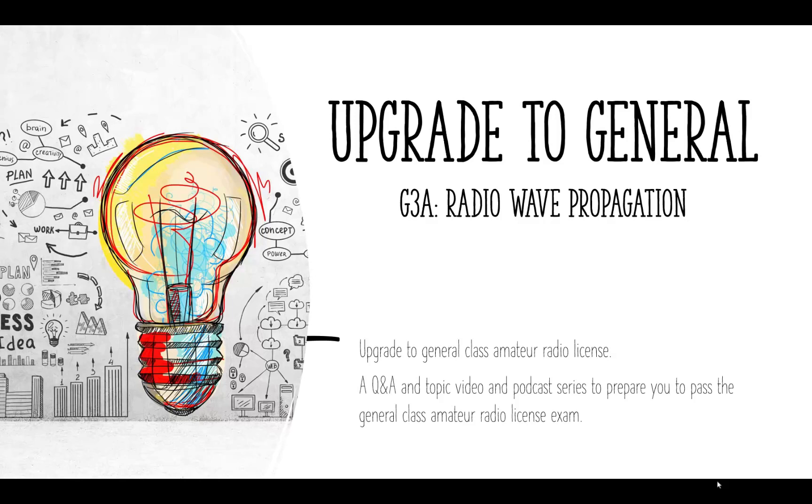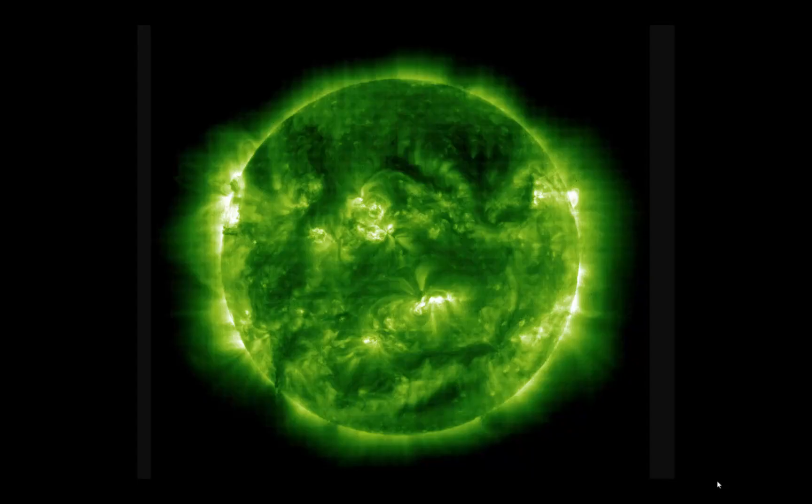Welcome back to Upgrade to General, a series to help you upgrade your amateur radio license to general class. This is episode sub-element G3, question group A, and I'm your host Ron Kahl, KE7CR. This question group is about how the sun affects radio propagation, some of my favorite topics.